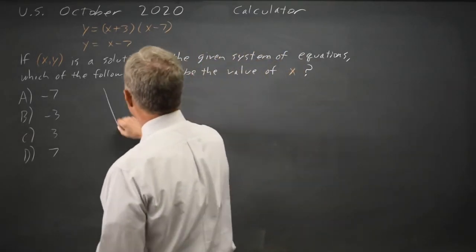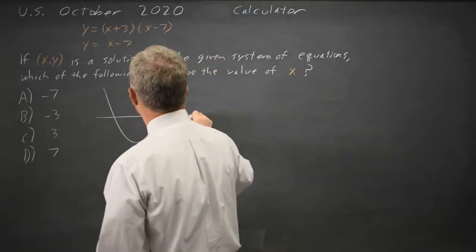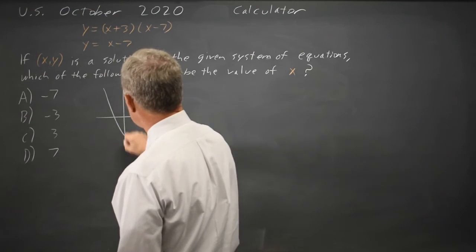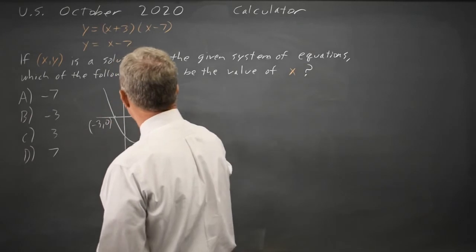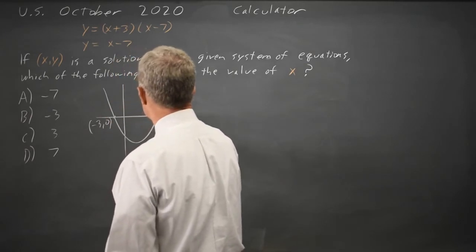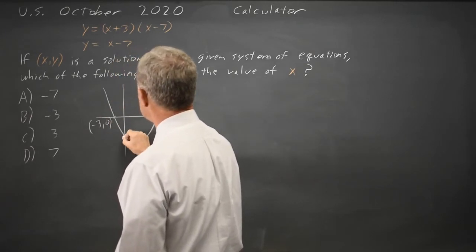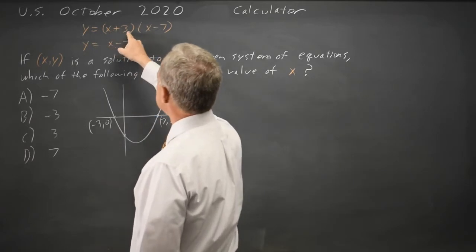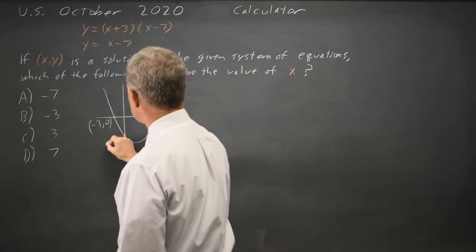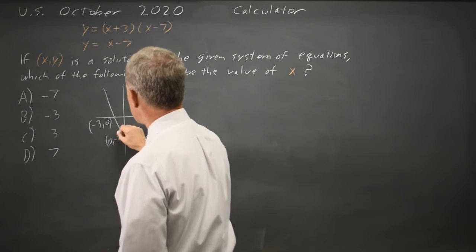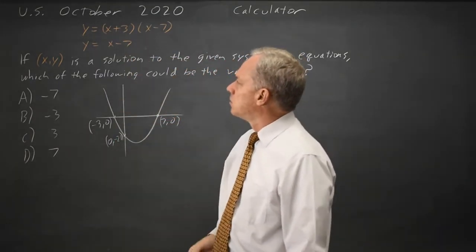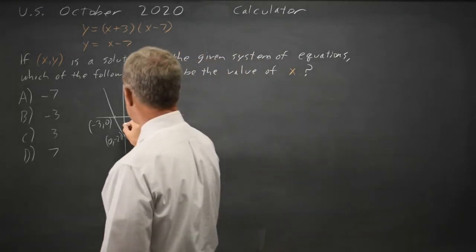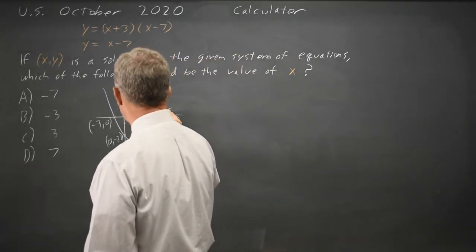It's a quadratic with x-intercepts at negative 3 and positive 7, and the y-intercept would be at x equals 0, negative 21. And we have a line, y equals x minus 7, so the y-intercept is negative, and the x-intercept is positive 7.